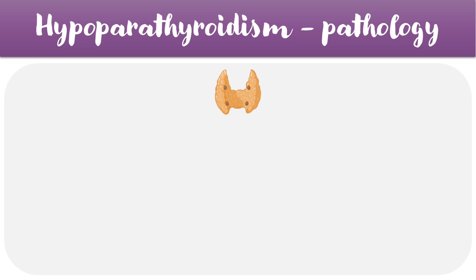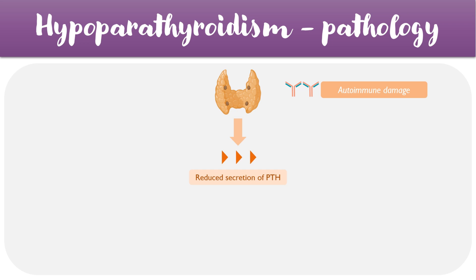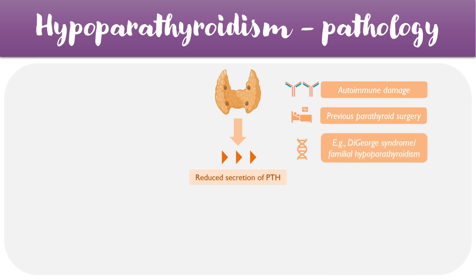Let's now take a closer look at the pathophysiology of hypoparathyroidism, where there's a reduction in the levels of parathyroid hormones secreted in the blood. There can be a multitude of reasons which lead to hypoparathyroidism, but some of the key causes include autoimmune damage — where the body's own immune cells attack the parathyroid glands — previous parathyroid surgery, which could be in response to hyperparathyroidism, or genetic causes such as DiGeorge syndrome or familial hypoparathyroidism. The condition impairs the activity of parathyroid hormone, so all of the systems discussed on the previous slide are slightly hindered.